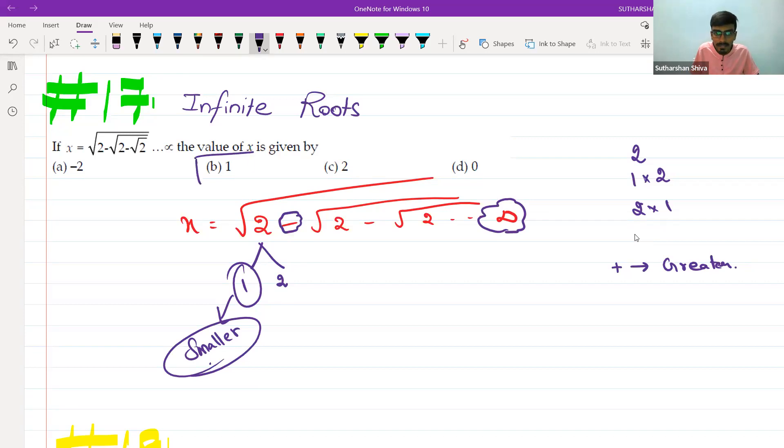So my answer is option B. Whenever it is a root, take the product of two consecutive numbers. If you find a plus sign, the greater number is your answer.